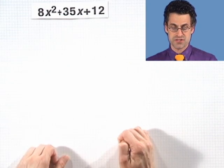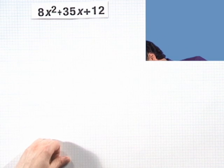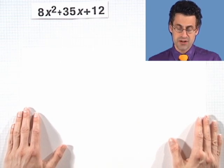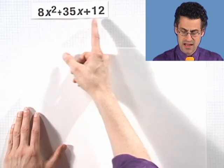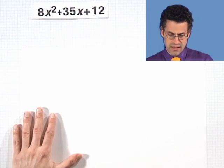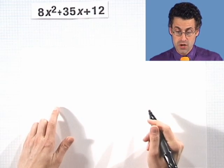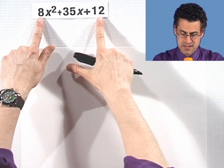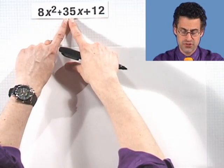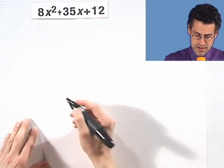Now armed with the fact that we know a, b, and c, let's see that we can factor trinomials in a systematic way. Let's check out this trinomial: 8x squared plus 35x plus 12. I want to factor that. So the first thing I do is see if there is a greatest common factor of 8, 35, and 12 that's bigger than 1. I see there isn't, so I'm all set. Now I have to think of two numbers whose product is 8 times 12, which is 96, and whose sum equals 35.